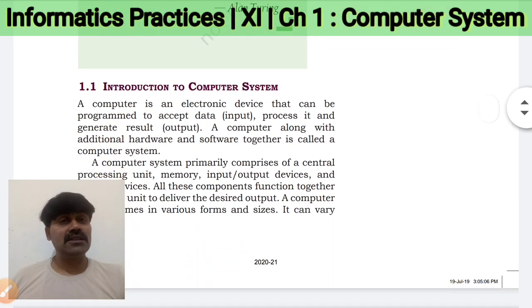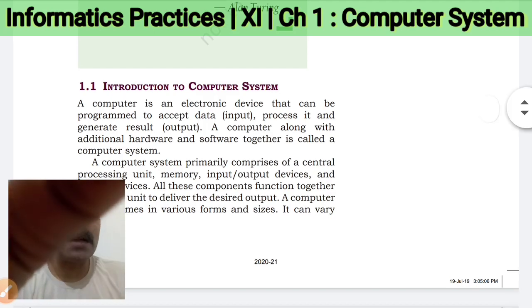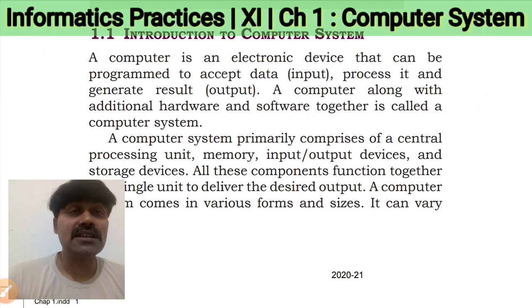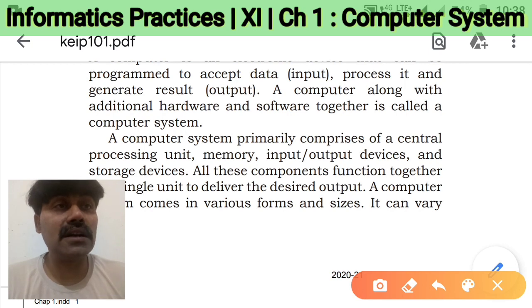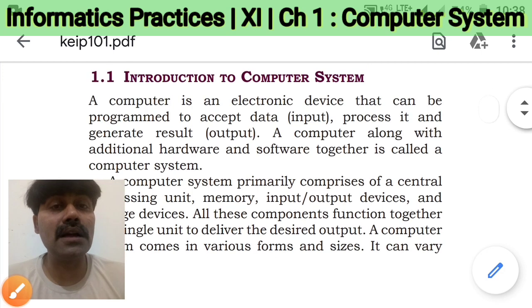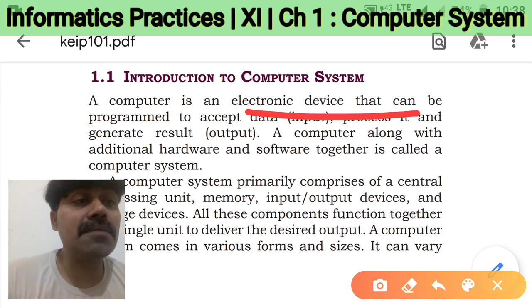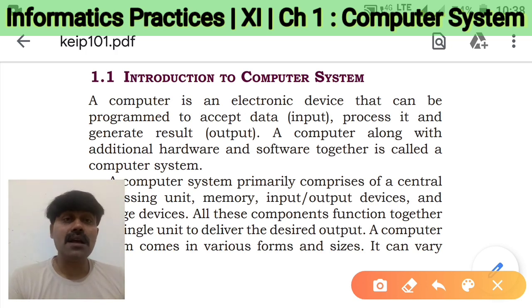So let's try to understand first: what is a computer system? A computer is an electronic device that can be programmed to accept data as input, process it, and generate results. The first thing to remember is that a computer is an electronic device — meaning it works with the help of electric circuits and electric currents.